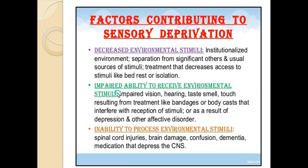Second is impaired ability to perceive environmental stimuli — stimuli are present in the environment but the person is unable to perceive them. This can occur with impaired vision, hearing issues, taste, smell, or touch problems. Treatment like bandages or a body cast can also interfere with reception of stimuli.